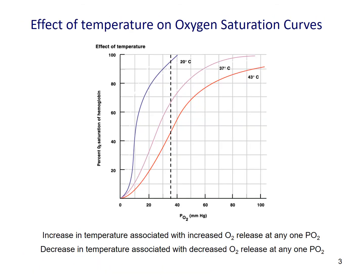Aside from CO2 and pH level, temperature is another factor that can modify the oxygen saturation curve. During exercise, body temperature can increase higher than usual, shifting the curve towards the right hand side and promoting oxygen release. When the temperature is cooler, we undergo less metabolism and the curve shifts towards the left hand side, promoting oxygen binding or oxygen loading. This happens more commonly for hibernating animals that reduce their body temperature and metabolic rates during winter.